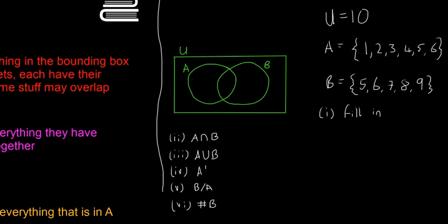So there's 10 altogether, 10 items in U. A has one, two, three, four, five, six in it and then B has five, six, seven, eight, nine in it. The first question is to fill it in. You start always by filling in the intersect, so what both of them have in common. In this case that's five and six. And then in A, I'm going to do one, two, three, and four. And then B has seven, eight, and nine. So that's the first one filled in.